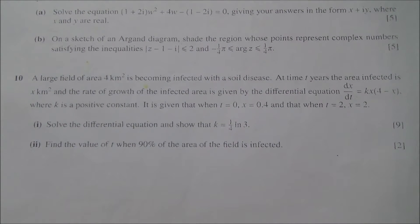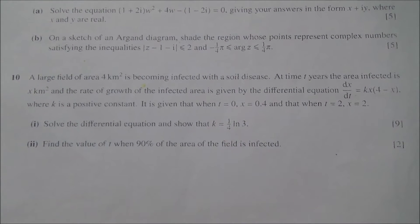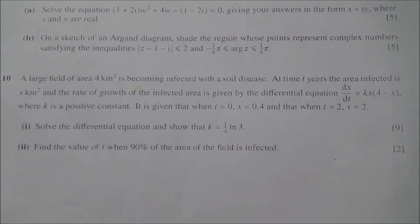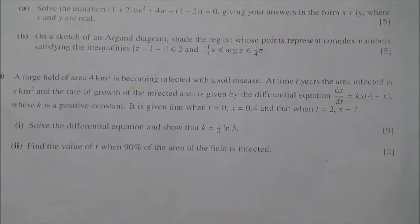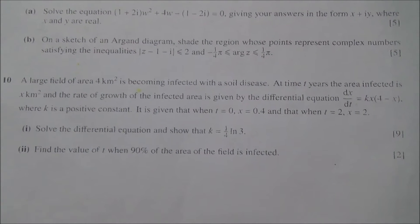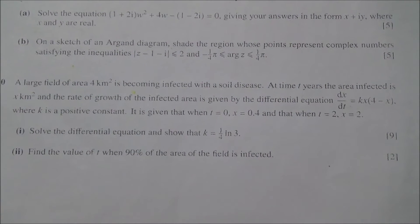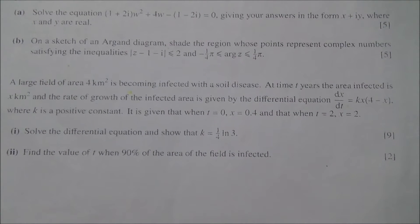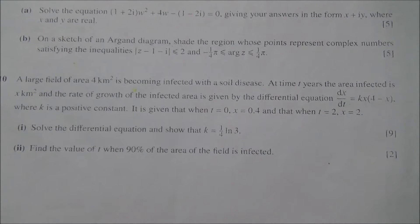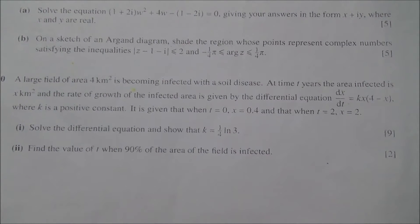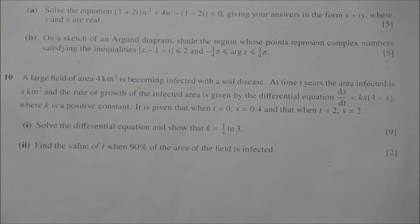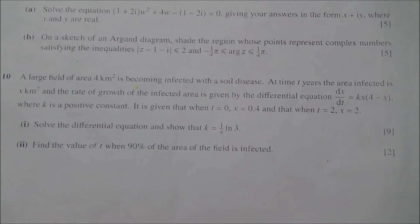Question number 10, taken from October 2016 Edexcel Maths paper 3. A large field of area 4 km² is becoming infected with a soil disease. At time t years, the area infected is x km², and the rate of growth of the infected area is given by the differential equation dx/dt = kx(4 - x), where k is a positive constant. It is given that when t = 0, x = 0.4, and when t = 2, x = 2. First part: solve the differential equation and show that k = ¼ ln 3.